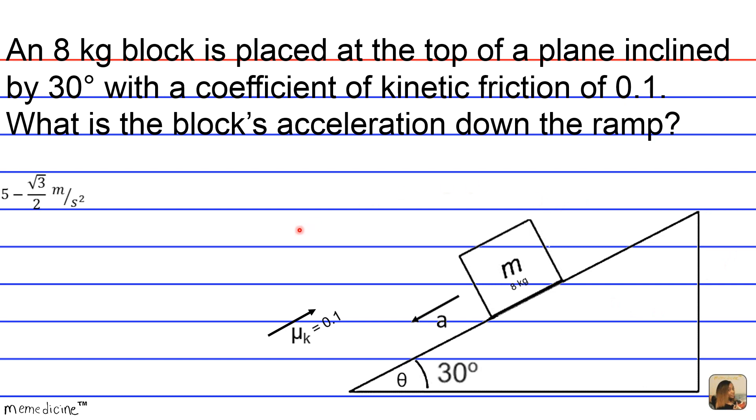Is it a, 5 minus radical 3 over 2 meters per second squared? Is it b, 5 minus radical 5 over 2 meters per second squared?